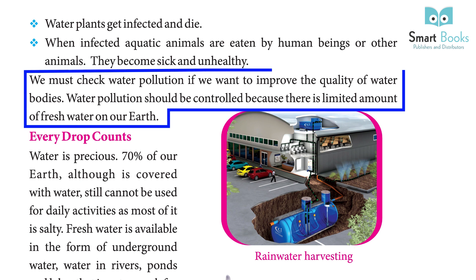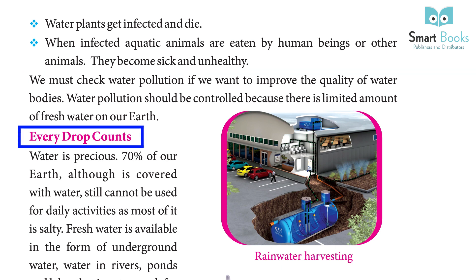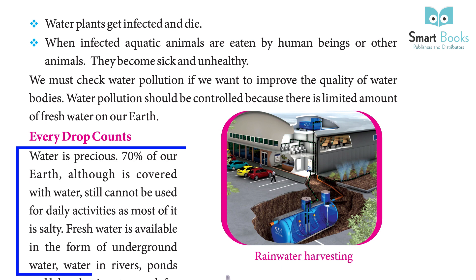We must check water pollution if we want to improve the quality of water bodies. Water pollution should be controlled because there is a limited amount of fresh water on our earth. Every Drop Counts — Water is Precious. 70% of our earth, although covered with water, still cannot be used for daily activities as most of it is salty.